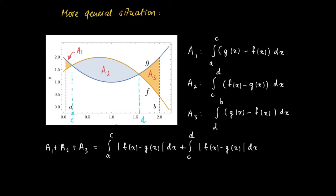A similar thing holds for A2. Since f(x) minus g(x) is larger than 0, we can write the absolute value of f(x) minus g(x) as well. And for the integral from d to b, where g(x) is larger or equal than f(x), we can write the absolute value again.